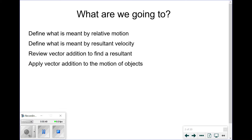What are we going to be doing? We're going to define what is meant by the term relative motion. We're going to define what is meant by the term resultant velocity. We're going to review how to add vectors using the tip-to-tail method to find a resultant, and we're going to be applying vector addition to the motion of objects.